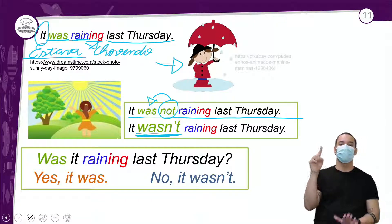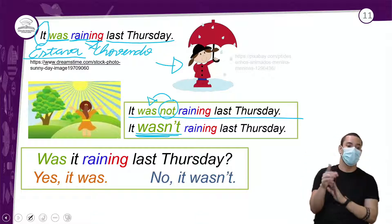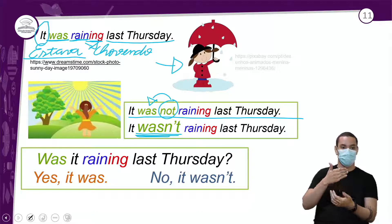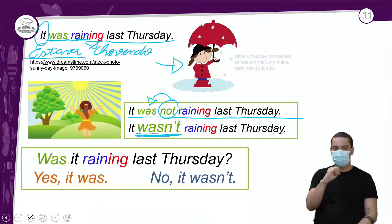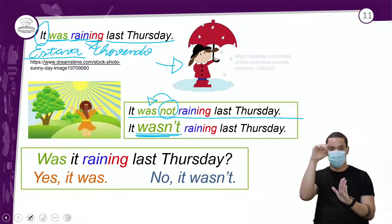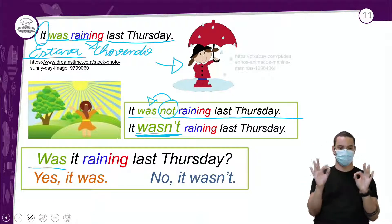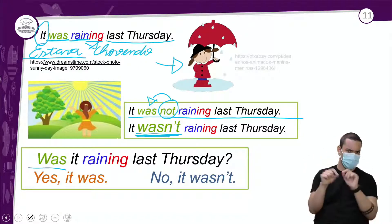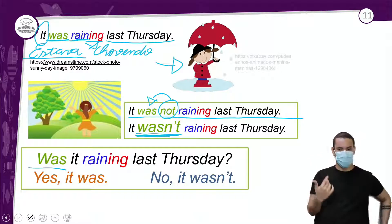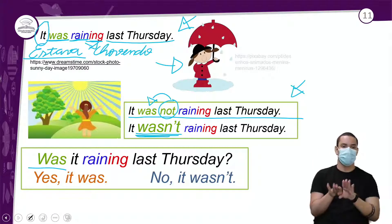Para perguntar, o verbo to be passa para a frente. 'Was it raining last Thursday?' — estava chovendo quinta passada? A entonação muda para indicar pergunta. Na interrogação com pronome interrogativo, ele vem primeiro, mas o to be ainda fica antes do sujeito.